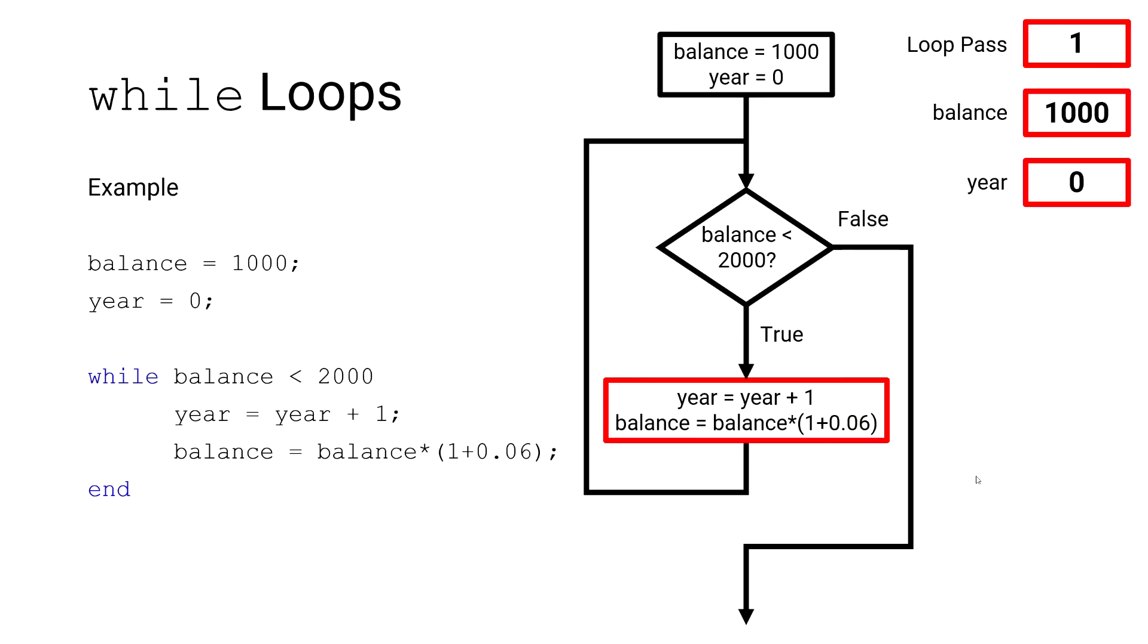We evaluate our two statements within the while loop. The year advances by one, and our balance updates to account for the 6% rate of return. Then we evaluate our logical expression again. We take our new balance, which currently has a value of $1,060. Our current balance is less than $2,000. That statement is true, and we begin our second loop pass.